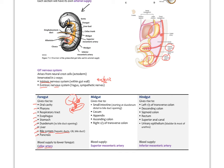The midgut gives rise to the small intestine from distal to the bile duct opening, through the cecum, appendix, ascending colon, and right two-thirds of the transverse colon — supplied by the superior mesenteric artery. The hindgut gives rise to the left one-third of the transverse colon, descending colon, sigmoid colon, rectum, superior anal canal, and urinary epithelium — supplied by the inferior mesenteric artery. So there is a clear threefold embryological division of the GI tract.